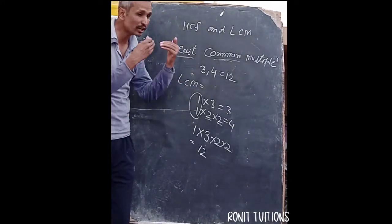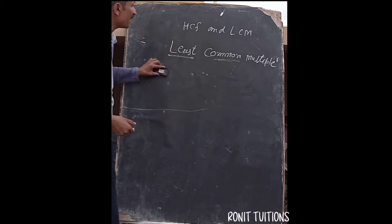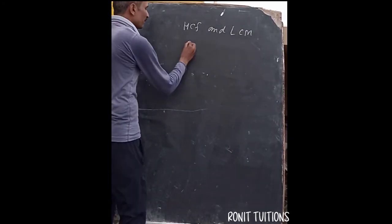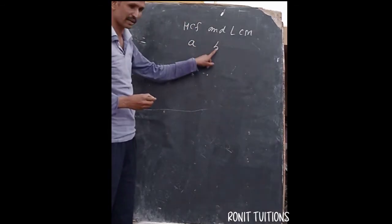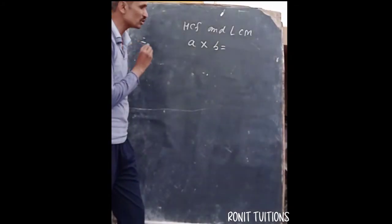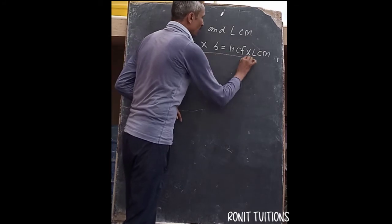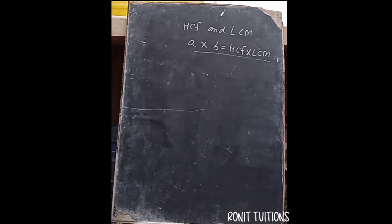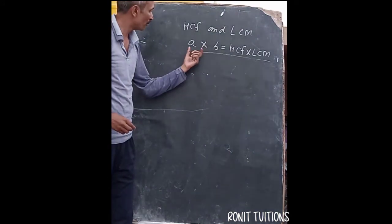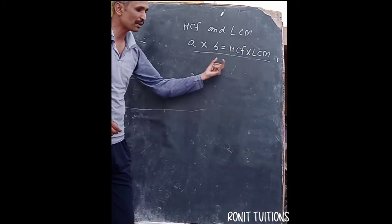Now, what is the relationship between HCF and LCM? Suppose any two numbers A and B are given. The product of the two numbers is always equal to the HCF of those numbers multiplied by the LCM of those numbers. So the important formula is: A × B = HCF(A, B) × LCM(A, B). This is an especially important formula for class 10 students.